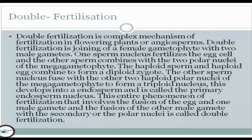The other sperm nucleus fuses with the two haploid polar nuclei of the megagametophyte to form a triploid nucleus. This develops into the endosperm and is called the primary endosperm nucleus. This entire phenomenon — the fusion of the egg with one male gamete and the fusion of the other male gamete with the polar nuclei — is called double fertilization.